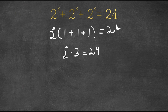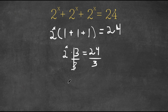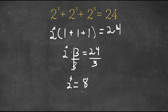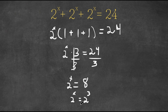So we get 2 to the power of x times 3 equals 24. I want to isolate 2 to the power of x, so I'm going to divide by 3 on both sides to cancel out the 3. That leaves 2 to the power of x on the left-hand side equal to 24 divided by 3, which is 8. Now 8 can be written as 2 to the power of 3. So we have 2 to the power of x equals 2 to the power of 3, and because the bases are the same, the exponents are equal, meaning x equals 3.